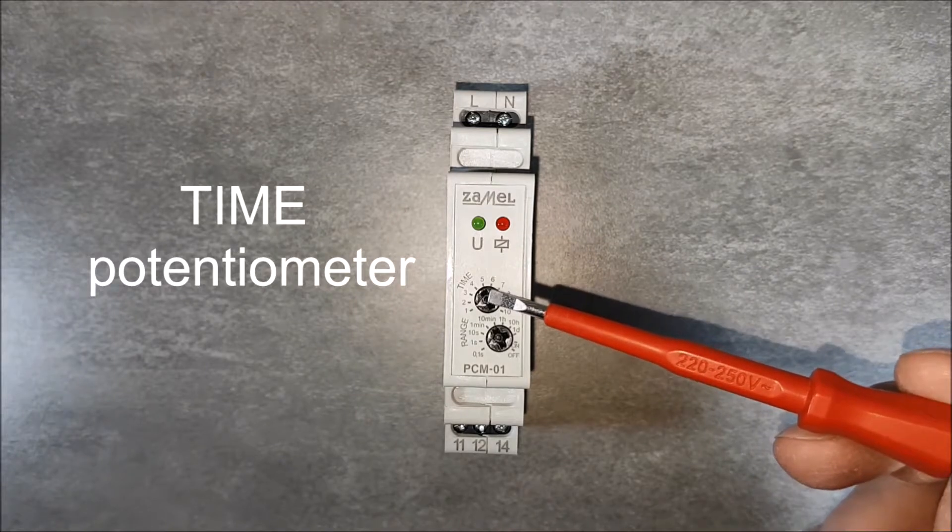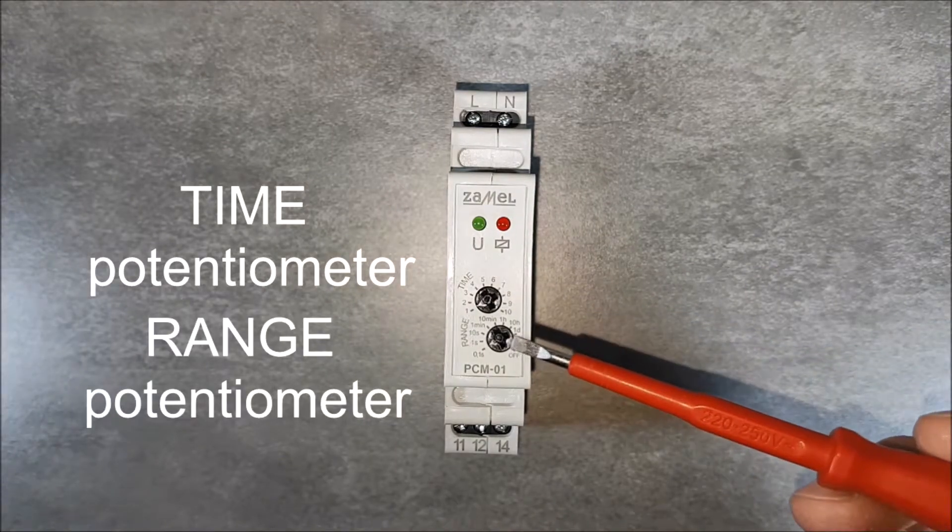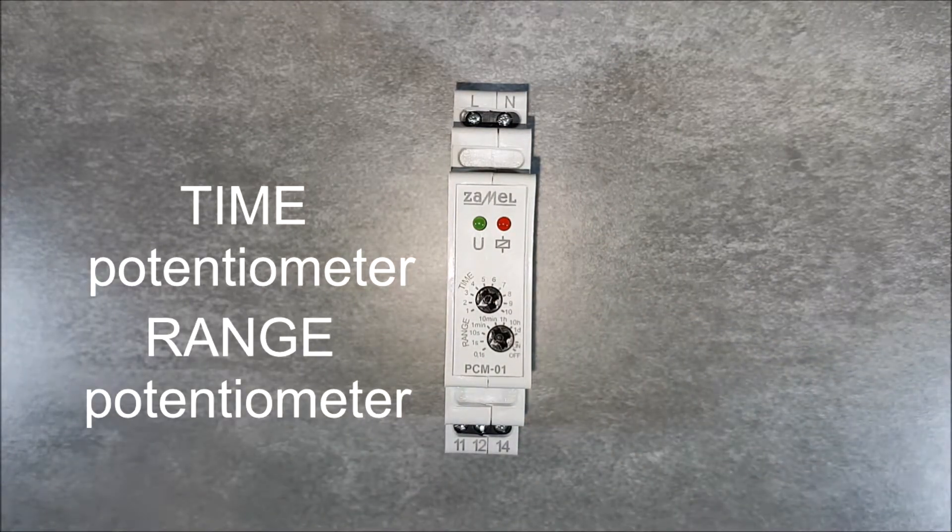On the front panel, there are two potentiometers: time potentiometer and range potentiometer. Potentiometers are for time setting.